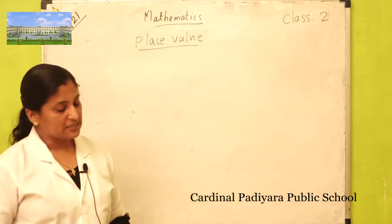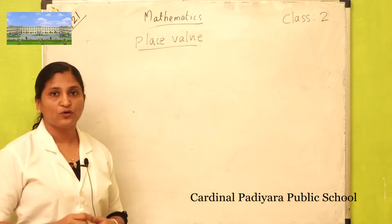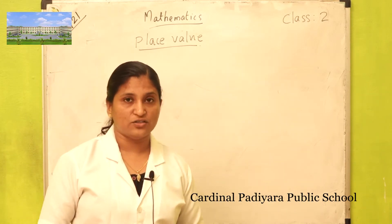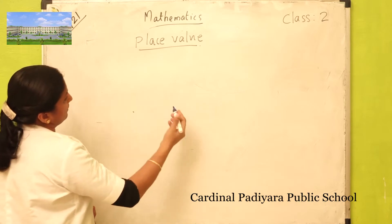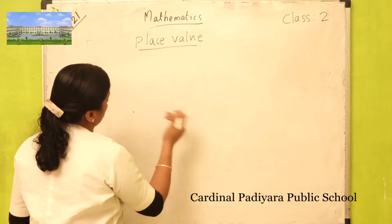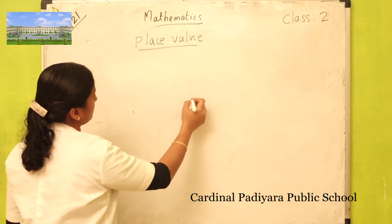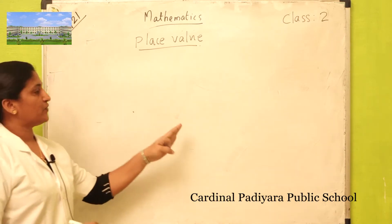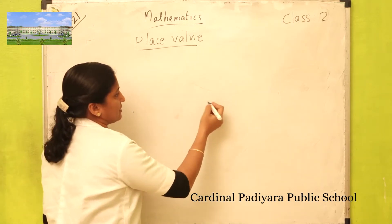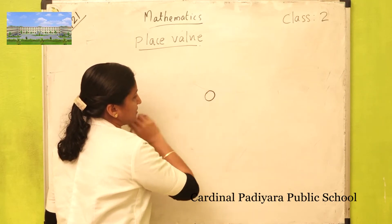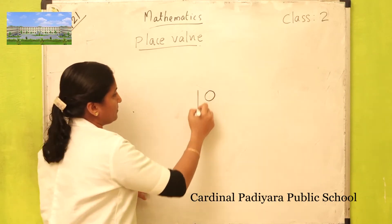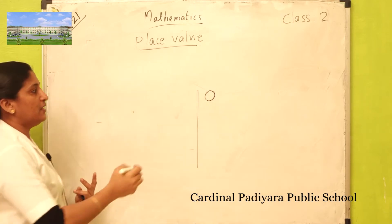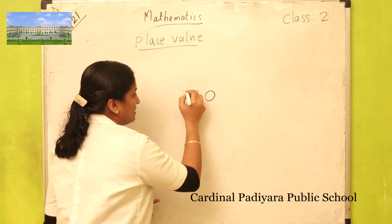The place value depends upon its position in a place value chart. This one is the place value chart. The place value chart starts from the right side. So this first one is ones place, then before ones is tens.